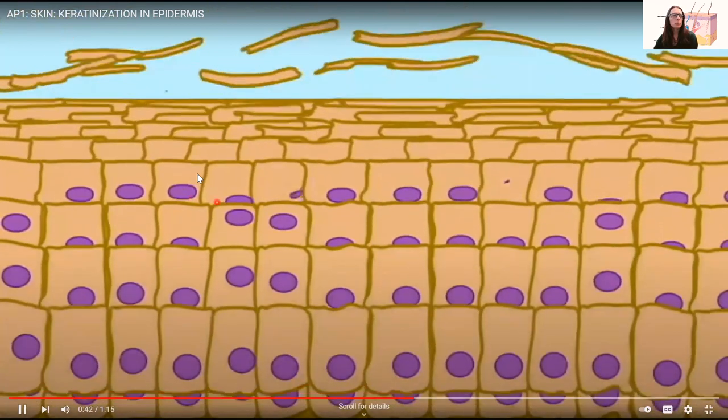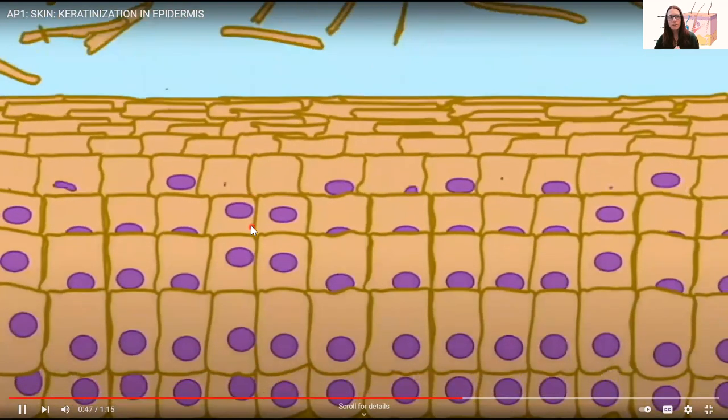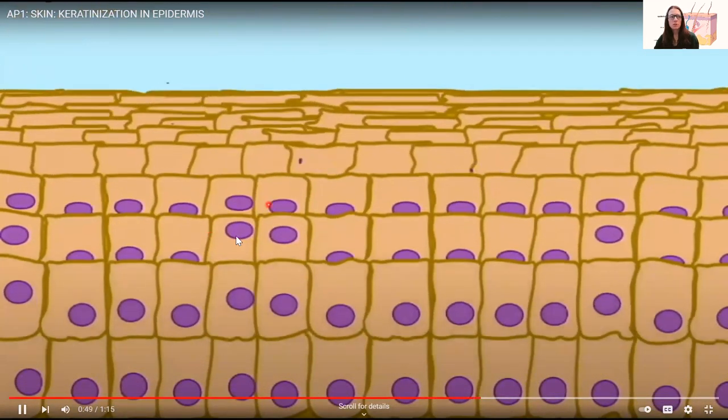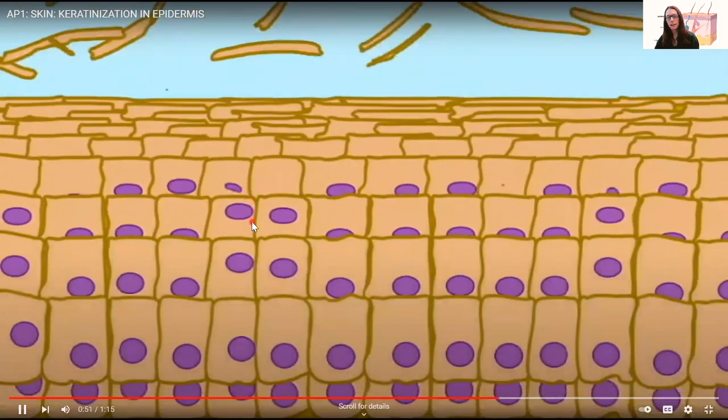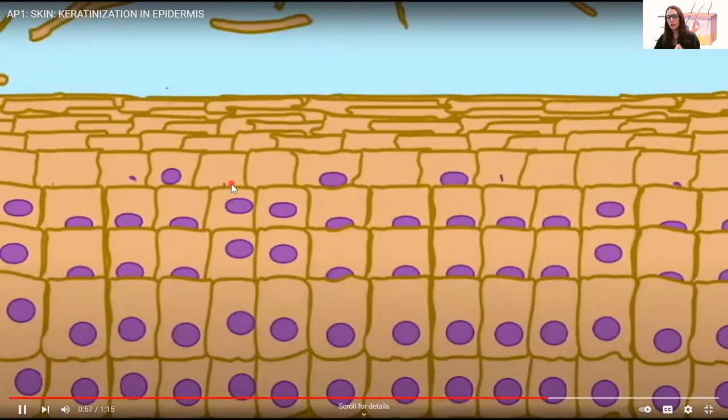Keratinized full of keratin look kind of like scales. This down here would be the granular layer where keratin is being produced. But somewhere down here when the cells still have nuclei, that keratin protein is being produced before they lose their nuclei.